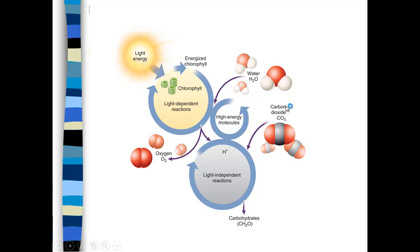Coming into the plant chloroplast is water — H2O — and also plants take up carbon dioxide. The water goes into what are called light-dependent reactions, which are based on chlorophyll. In light-dependent reactions, water is split into oxygen and hydrogen: a hydrogen ion and diatomic oxygen O2.